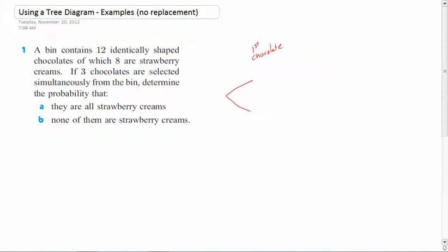So here's our first chocolate. Either it is strawberry or it is not strawberry. Now, the probability of being strawberry is 8 out of 12, which means the probability of not being strawberry is 4 out of 12.